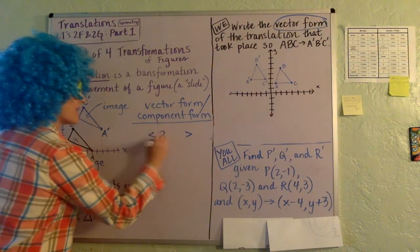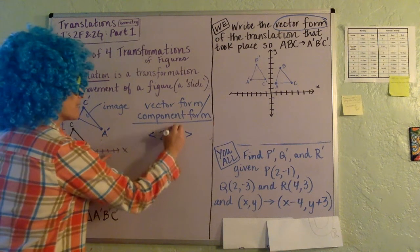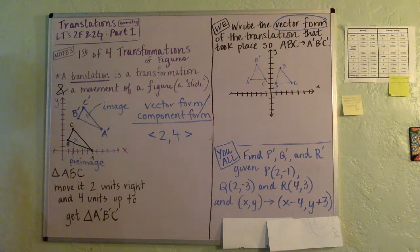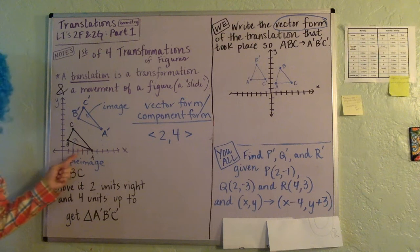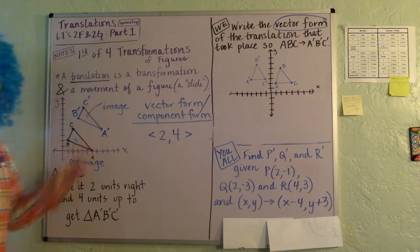And you would say we did positive two with all the X's, and we did positive four with the Y's, okay? That's what we call vector form of what we just did with this pre-image to this image, to slide it that way.